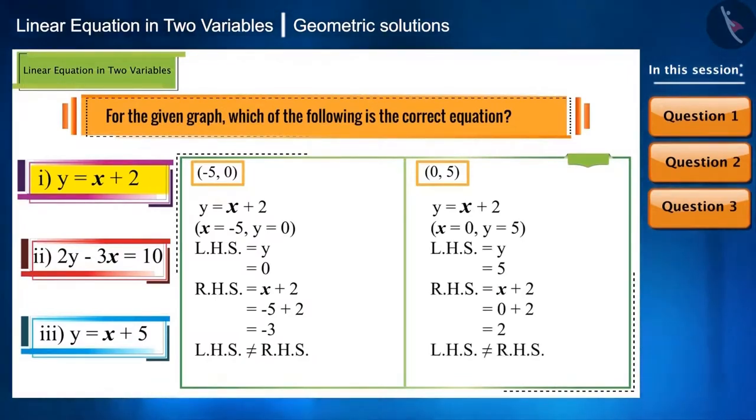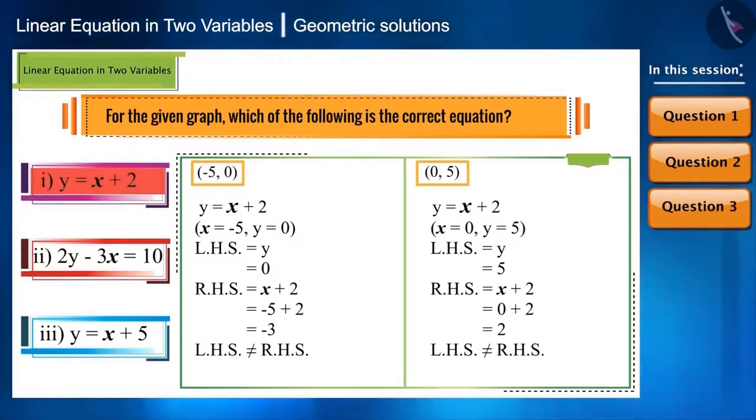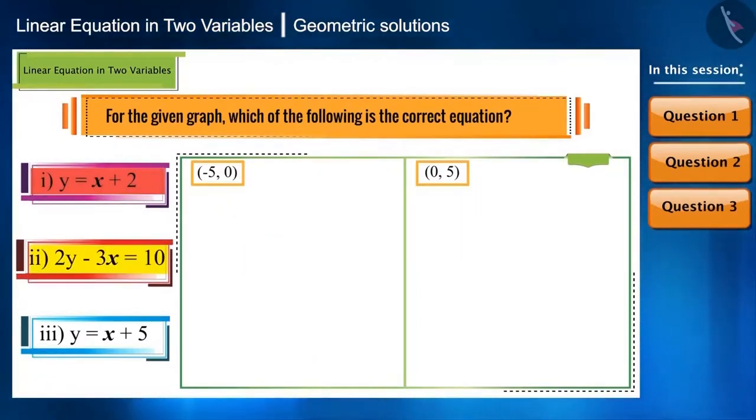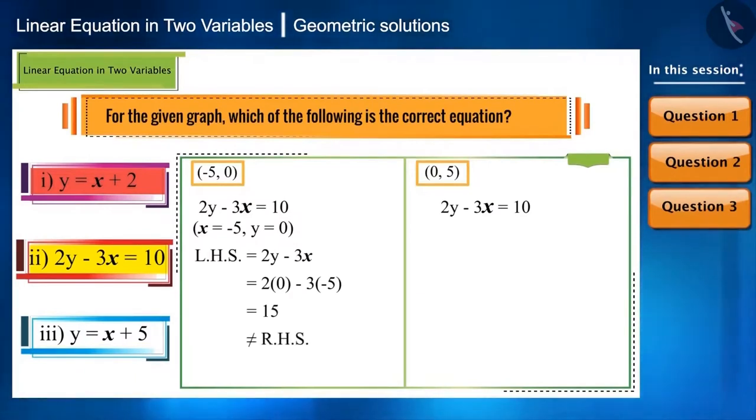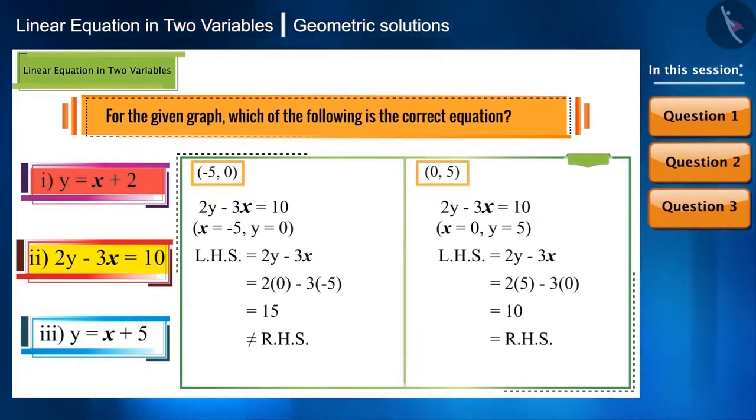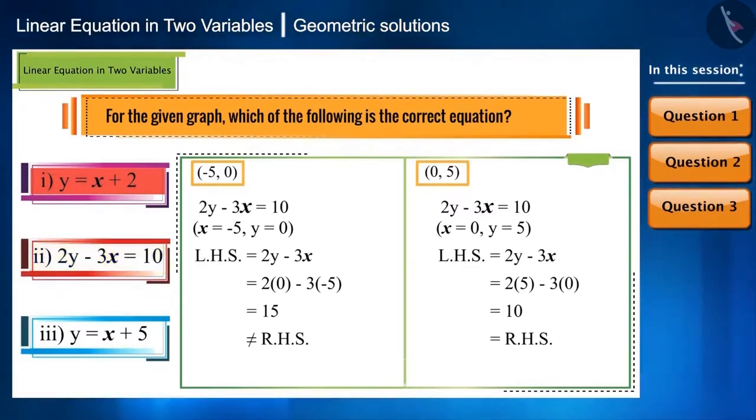Replacing x and y with these coordinates in equation 1 is not satisfying the equation. Similarly, equation 2 is not satisfied when x and y are replaced by minus 5, 0 coordinates. But, replacing the coordinates x and y with 0, 5 is making the LHS equal to RHS. So is this the equation of this line? No.